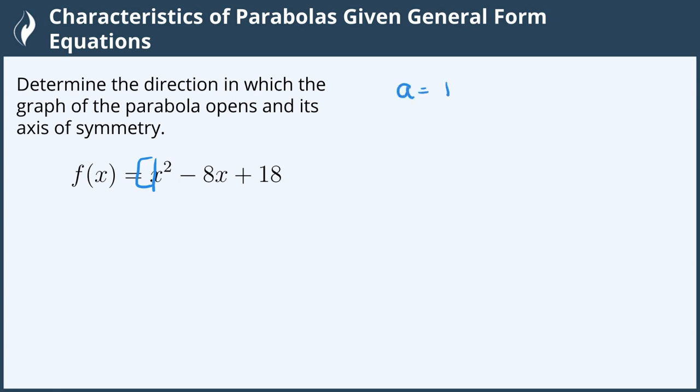If a is positive, then we end up with a parabola opening up like a smiley face. If the a is negative, then it opens down like a frowny face.